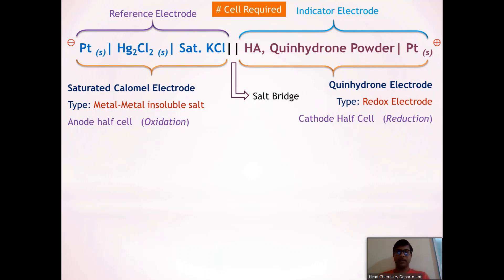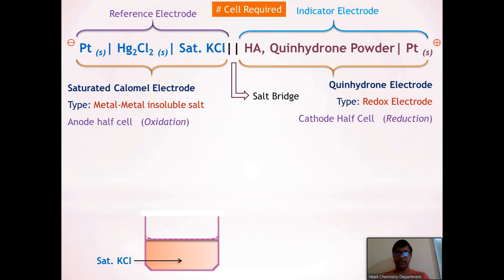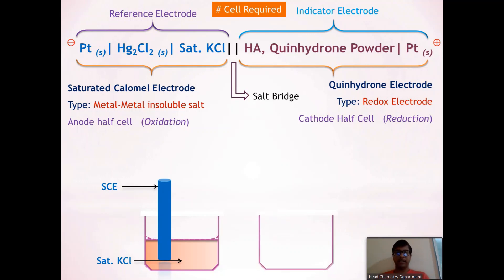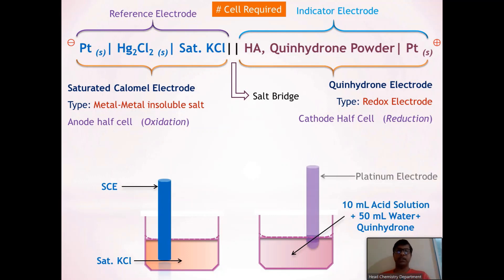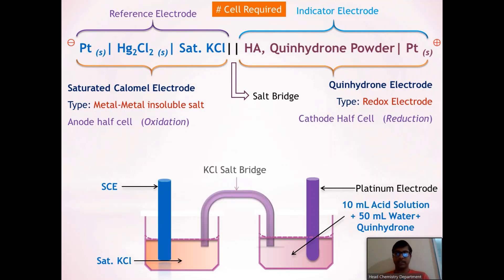Let's see how to construct this electrochemical cell. As per the cell representation, for the anodic half cell we take one beaker, fill it with saturated KCl solution, and dip the saturated calomel electrode into it. For the cathodic half cell, we take another beaker, fill it with 10 mL of acid solution and 50 mL of water, add a pinch of quinhydrone powder, and dip the platinum electrode into it. Then the KCl salt bridge is dipped into both half cells.